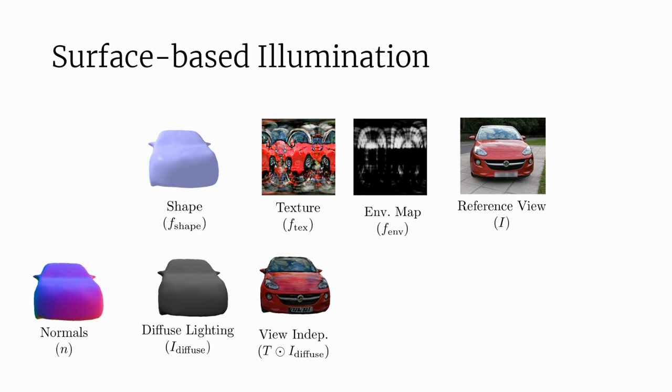Then, using the normals, environment map, and material properties, we can compute the specular highlights, capturing the view-dependent component of the light. By combining these together, we can render an image.